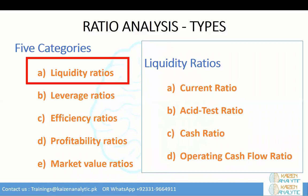Liquidity ratios are financial ratios that measure a company's ability to repay both short and long-term obligations. Common liquidity ratios include the current ratio, which measures the company's ability to pay off short-term liabilities with current assets; the quick ratio, which measures the ability to pay off short-term liabilities with quick assets including cash and easily convertible assets; the cash ratio, which is more strict and determines whether the company can pay off short-term liabilities with cash and cash equivalents; and the operating cash flow ratio, which measures how many times a company can pay off current liabilities with cash generated in a given period.